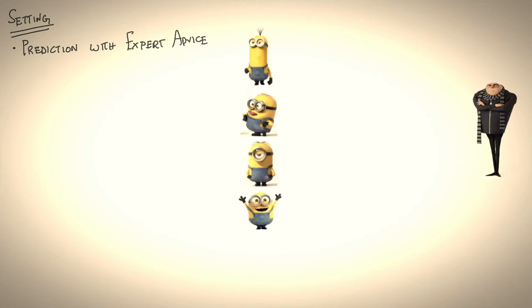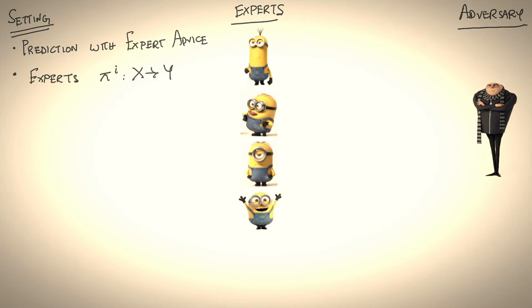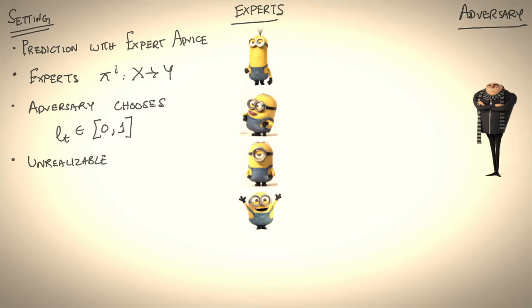Let's begin by briefly recapping the prediction with expert advice setting that we looked into last lecture. You have a set of experts and you have an adversary, and you're playing a game where at every round you're choosing an expert. An expert is a policy that maps input to output. When you choose an expert, your adversary chooses a loss function for each of these experts. Moreover, we are in the unrealizable setting, which means every expert makes mistakes.